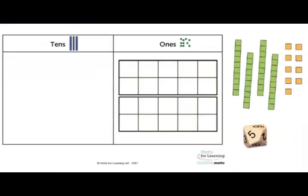For this game you'll need the place value chart with embedded tens frames handout, a selection of base 10 ones and tens, and a 10 sided dice.